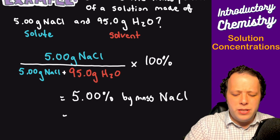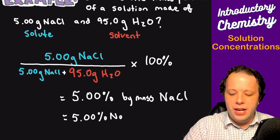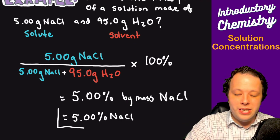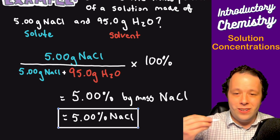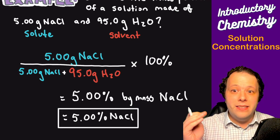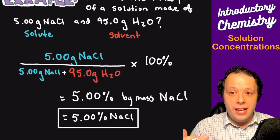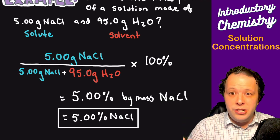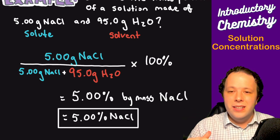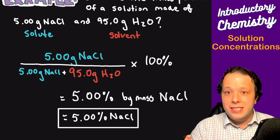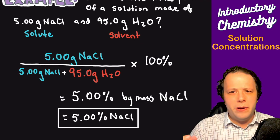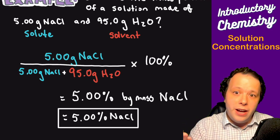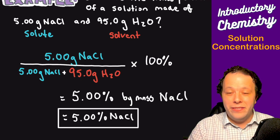Usually we'll just say 5% NaCl. This is one of the most popular representations in biology and the healthcare field — think IVs, saline solutions, glucose solutions given to patients, all typically represented in percents. If you ever see an IV, it typically says about 0.9% NaCl, which is the standard, or about 5% glucose, which is a standard amount of sugar for most patients. You have to understand what these represent so you're giving the correct IVs to your patients.